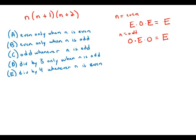So in other words, regardless of whether n is even or odd, this product is always going to be even. First of all, C is right out—it's never odd. And the problematic words in A and B: it's not even only when n is odd or only when n is even. It's even all the time.